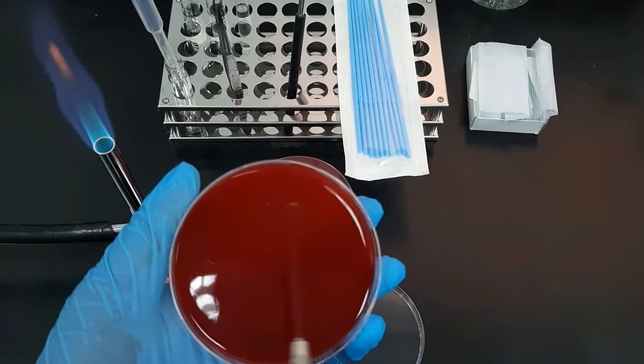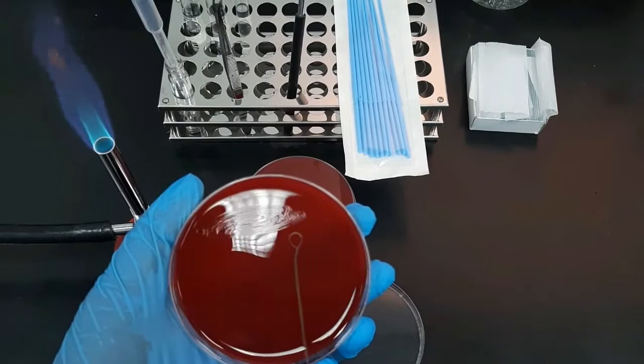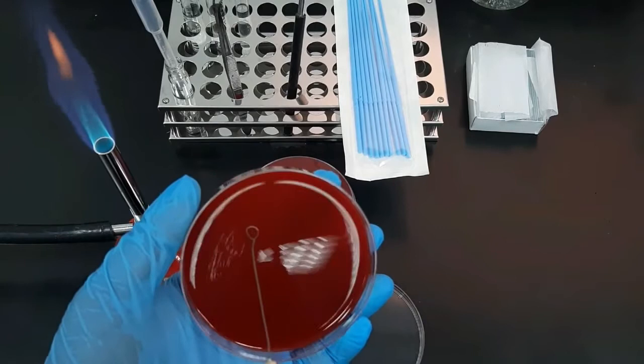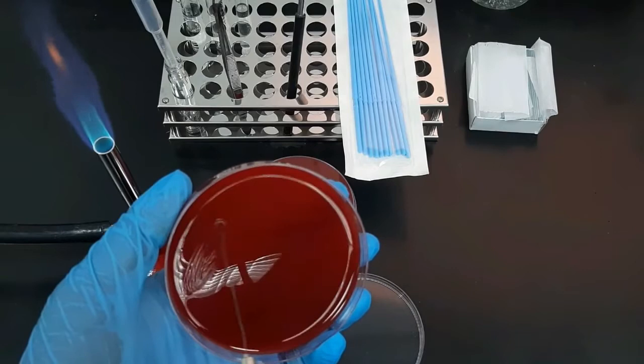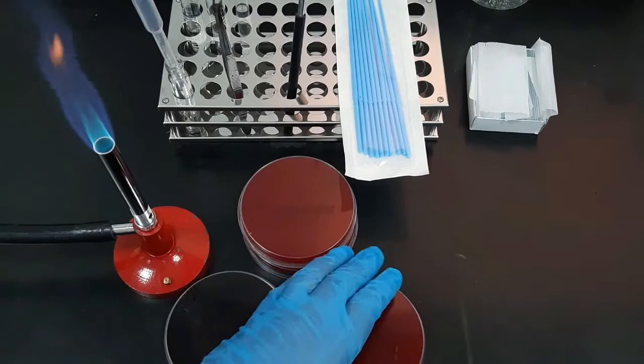After the streaking in the first quadrant, turn the plate 90 degrees and streak into the next quadrant without overlapping the previous streaks. Close the plate and sterilize the wire loop.